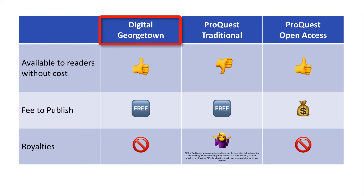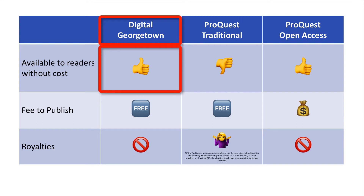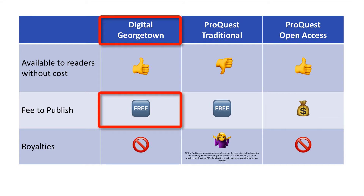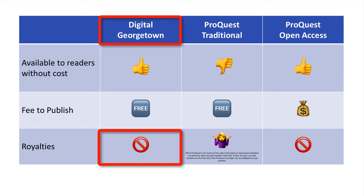When your work becomes available in Digital Georgetown, either upon submission or after an embargo has expired, it will be available for viewing, printing, and downloading to anyone with internet access who visits Digital Georgetown. There are no fees associated with archiving your work in Digital Georgetown, and you will receive no royalties from those who use your work.